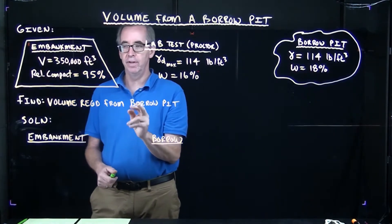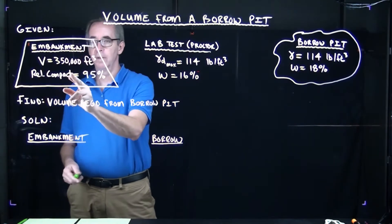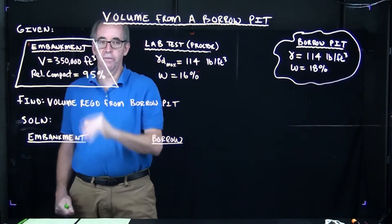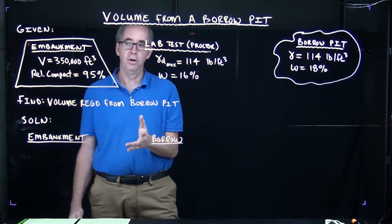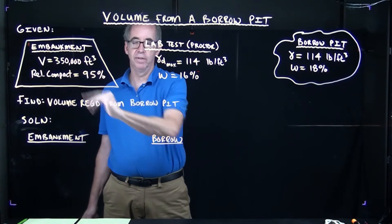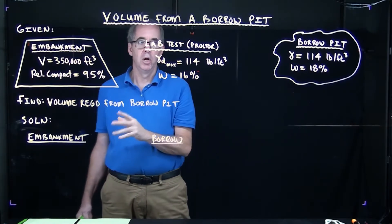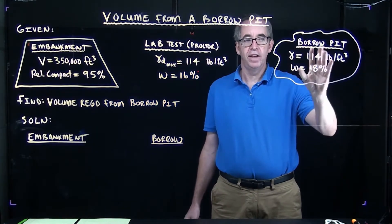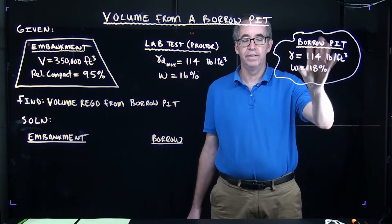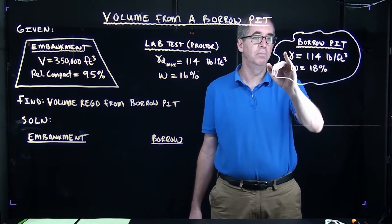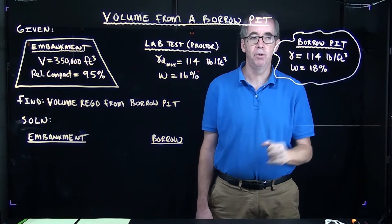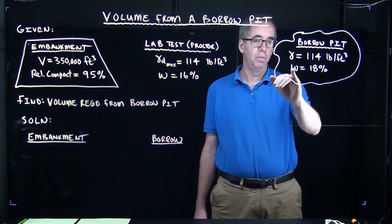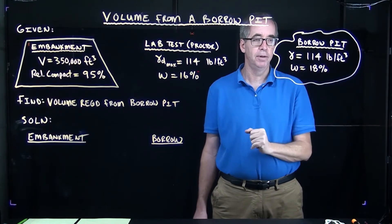The project specifications indicate that we need a relative compaction of 95%. We're going to install 350,000 cubic feet of soil and we have to meet a 95% relative compaction. The source of our soil is coming from the borrow pit. A test of the soil in its existing condition indicates that it has a moist unit weight of 114 pounds per cubic foot with a moisture content of 18%.